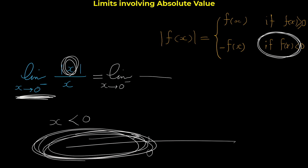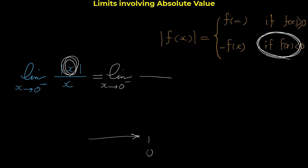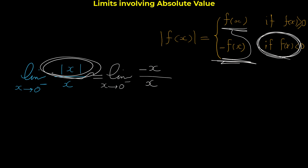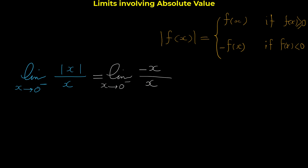When x approaches 0 from the left, x is in the negative region of the number line — so x is a negative number. The expression inside the absolute value, x, is negative. By our rule, since f(x) < 0, |x| = -x. So we have the limit of -x/x as x approaches 0 from the left. The x's cancel, and the limit equals -1.